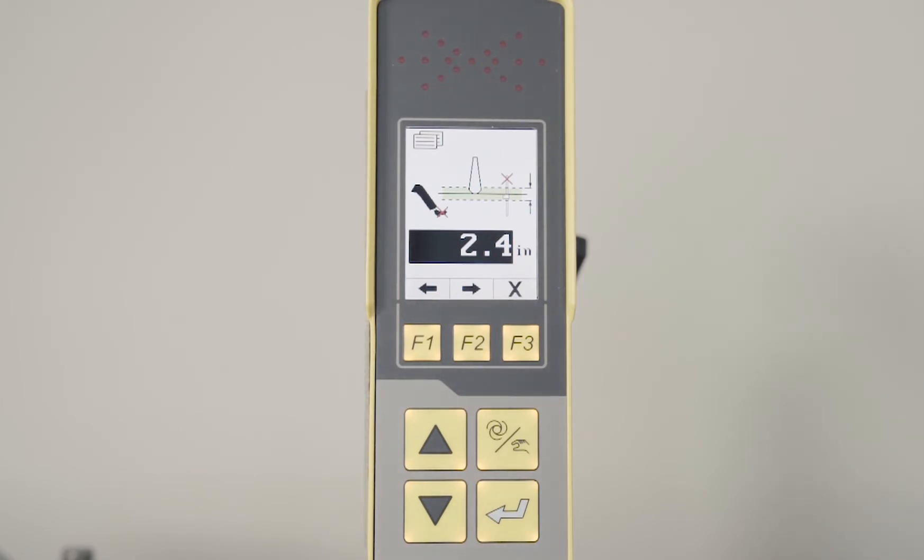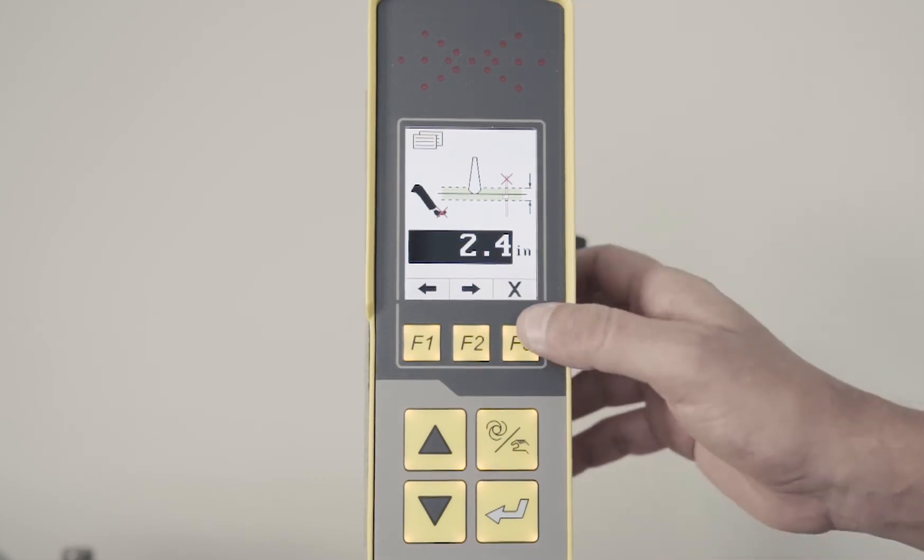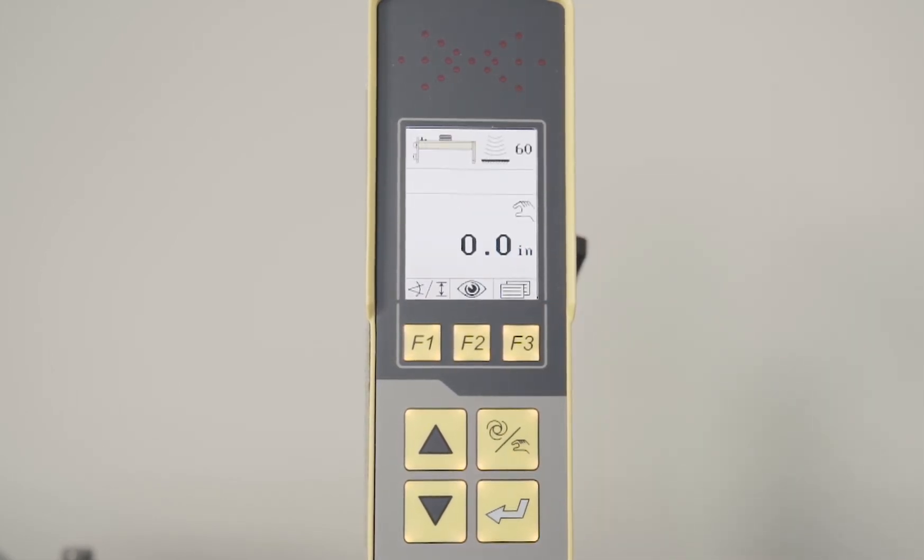So if somebody gets a shovel underneath your sensor, it won't cause it to raise or lower. So exit out of here with that set at 2.4, put in automatic.